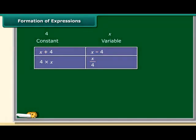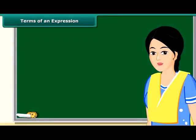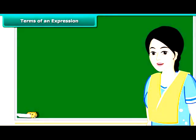Let us see how the algebraic expression 6x plus 9 is formed. It's really simple. First, multiply variable x with constant 6, then add a constant 9 to the product. Similarly, 14y minus 30 is obtained by first multiplying y by 14 and then subtracting 30 from the product. You see these expressions were obtained by combining variables with constants. You can also obtain expressions by combining variables with themselves.